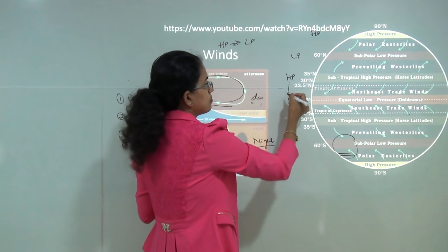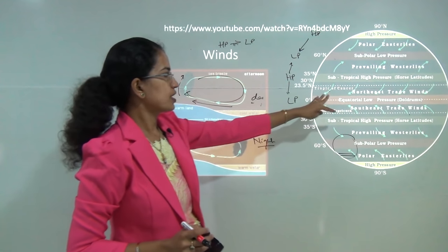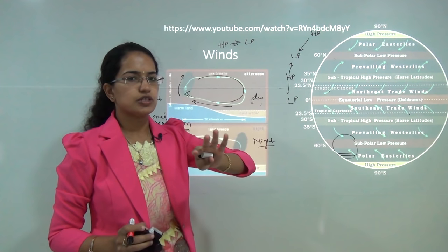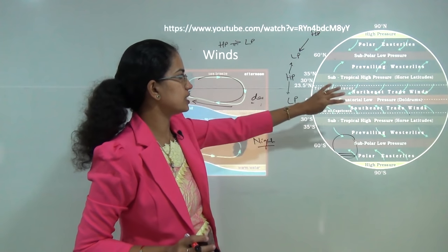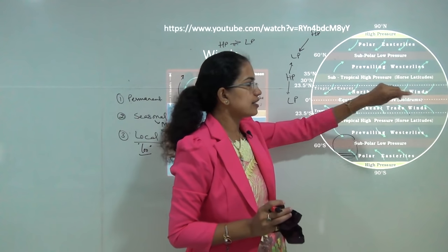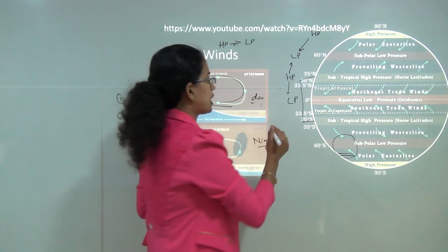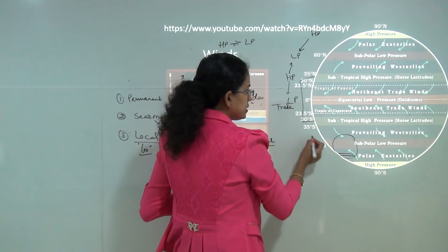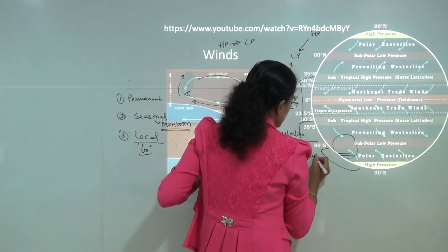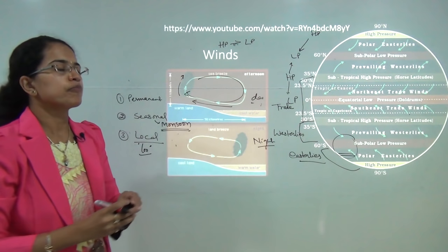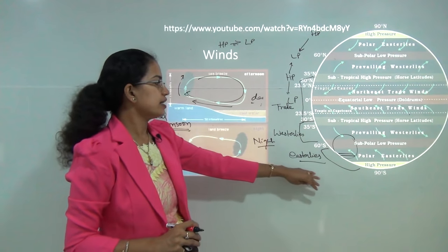Wind always moves from high pressure to low pressure. There is also rotation of wind explained by the Coriolis force. The three basic permanent winds are: trade winds, which blow in the tropical region; westerlies, next to the trade winds; and easterlies, which blow from the poles. Trade winds, westerlies, and easterlies are permanent winds, moving in a particular direction throughout the year.